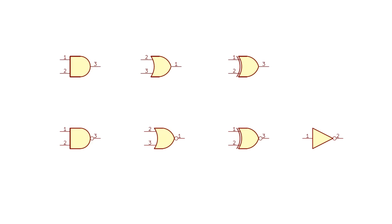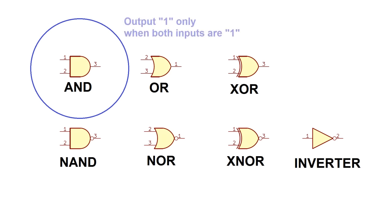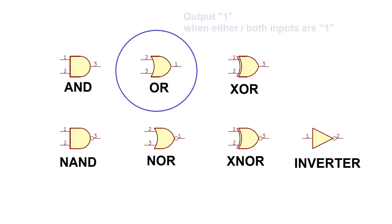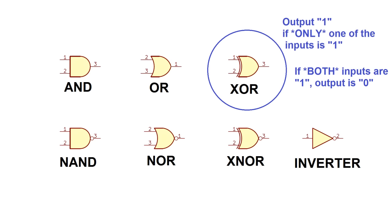Logic gates are the building blocks that make up any kind of logic device, from the most basic integrated circuits to the most advanced CPUs. The AND gate has an output of 1 when both inputs are 1. The OR gate has an output of 1 when either or both inputs are 1. And the XOR, or exclusive OR gate, has an output of 1 when only one of the inputs is 1 — if both are 1, the output is 0.